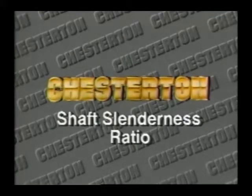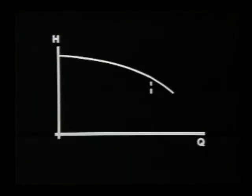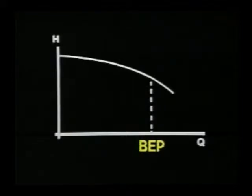The shaft slenderness ratio. Every centrifugal pump has a capacity at which it works best. This is sometimes called the ideal capacity or the best efficiency point, and is a direct result of the criteria used in the pump design.